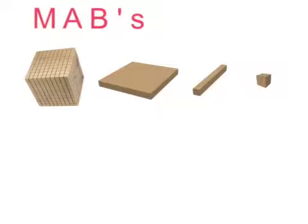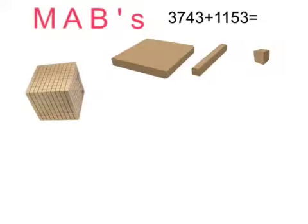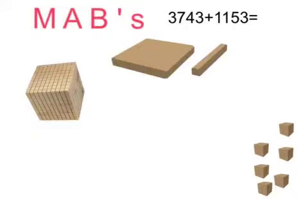Another way of adding numbers together is using MABs. Now MABs are a way of modelling your addition sum. My algorithm example to show you is the number 3,743 plus 1,153. So for this problem, I'm going to start with the 1s. Now the 1s, I have 3 and 3, and they're my doubles, and I should be thinking 6 anyway. But let's get 1, 2, 3, and another 3. 1, 2, 3. So there's the 1s that I need.